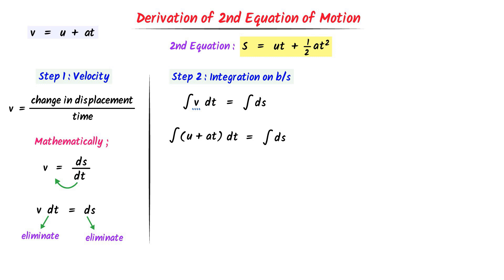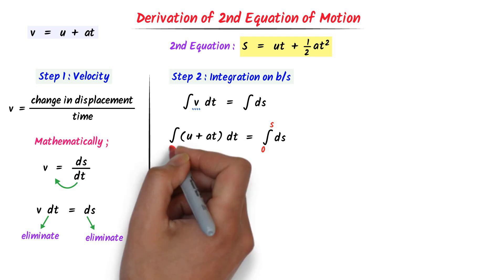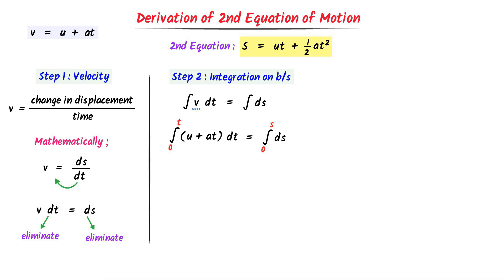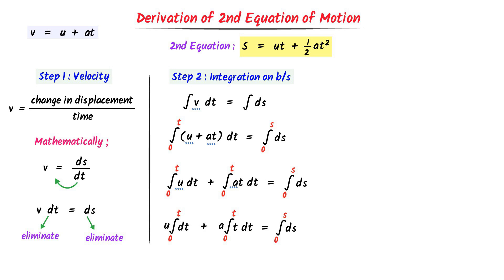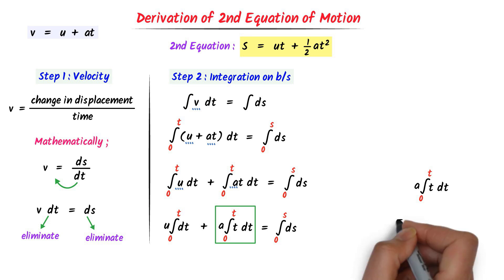Now we apply limits to the integration. Displacement changes with respect to time, so we need initial and final values. Let the initial value of displacement be 0 and the final value be s, while the initial value of time is 0 and the final value is t. The positive sign separates the two terms u and at, so I integrate them separately: ∫u·dt + ∫at·dt = ∫ds. Since u and a are both constants, I write them outside the integral.